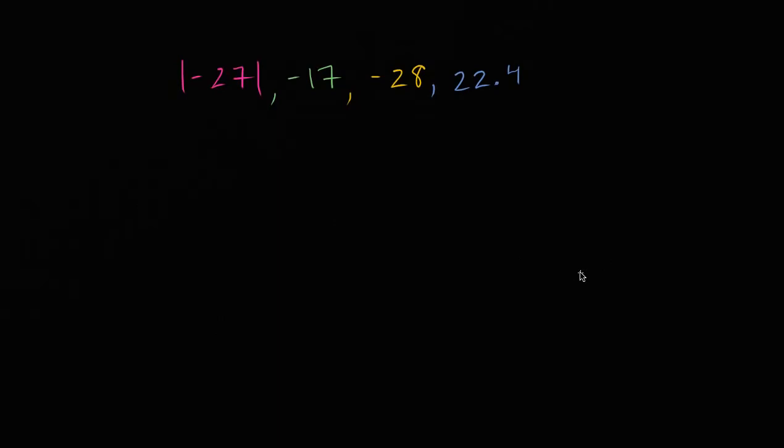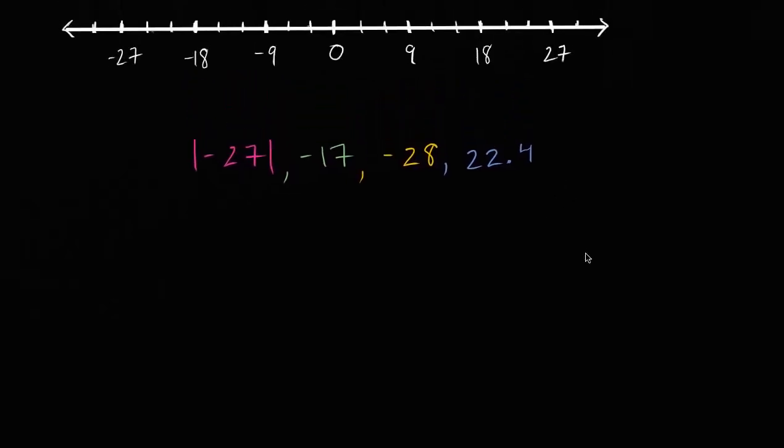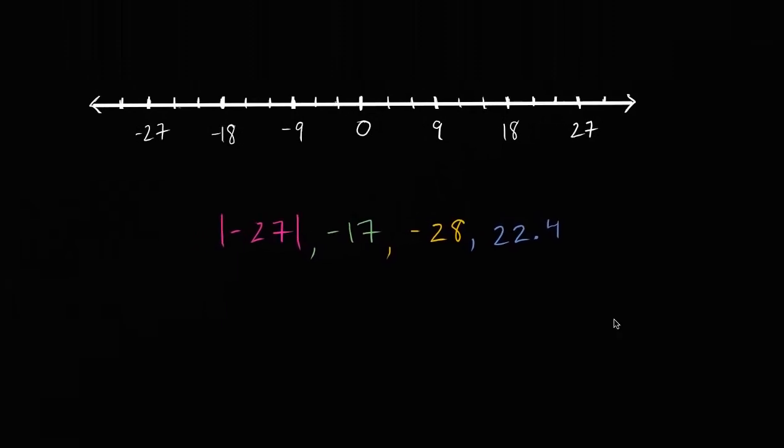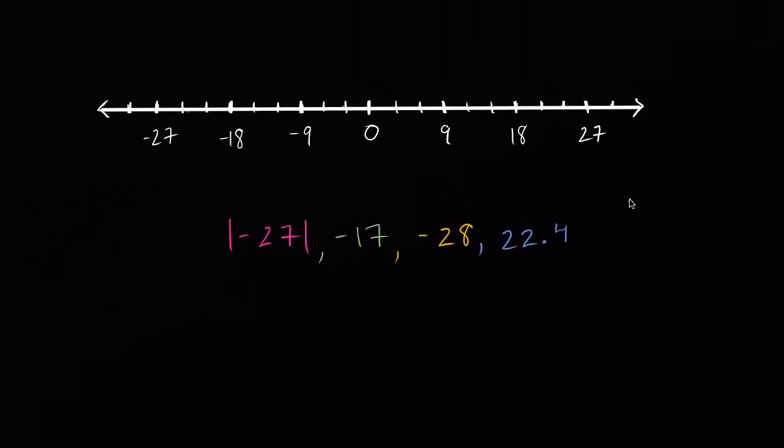Like always, I encourage you to pause the video and try to work through it on your own. So I'm assuming you've had a try at it. The easiest way I can think about it is to plot them all on a number line. You might want to draw it out, or eventually you kind of have a number line in your head and can think about it that way.